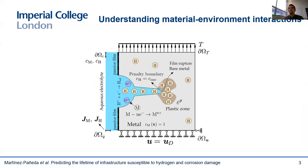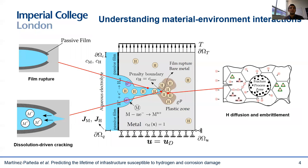The specific mechanisms at play depend on the material and the environment being considered, but factors that can govern material behavior include the transport of species, passivation and rupture of the passivation film, metal dissolution, mechanical straining, hydrogen ingress and diffusion within the crystal lattice, metal embrittlement, and so on. So the physical picture is complicated, and the development of predictive models is challenging.